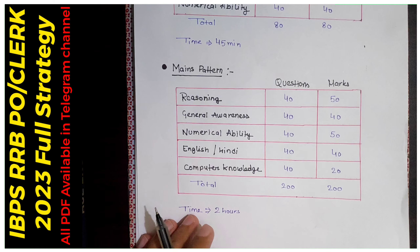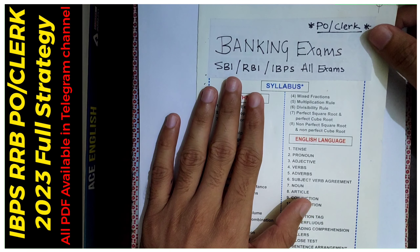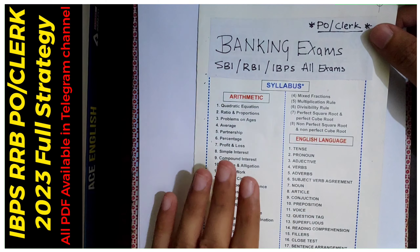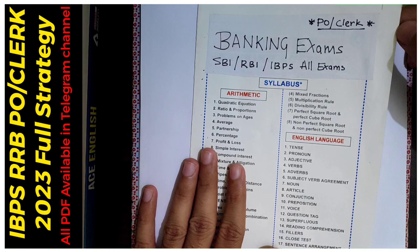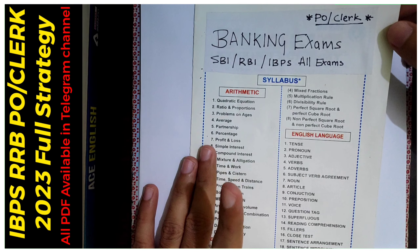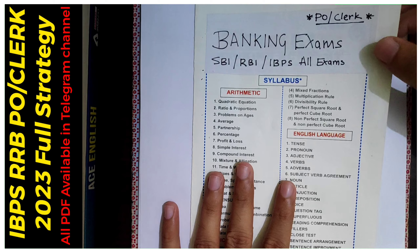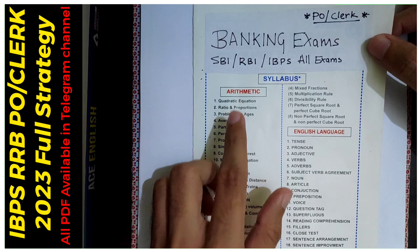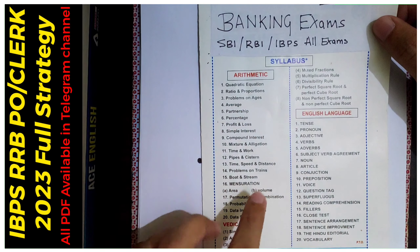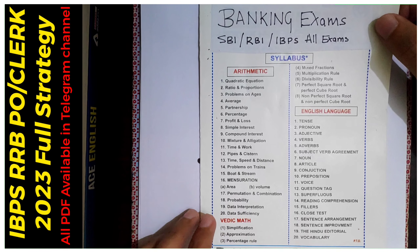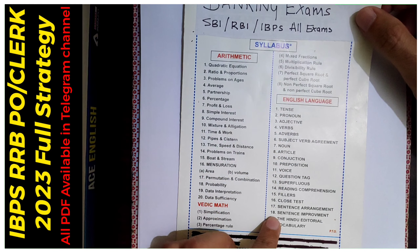Now let's talk about the syllabus. This is the complete syllabus for the banking exam. For arithmetic you can see all the topics listed — Vedic Math, simplification, and more. This is the whole syllabus. Then there is the English syllabus.